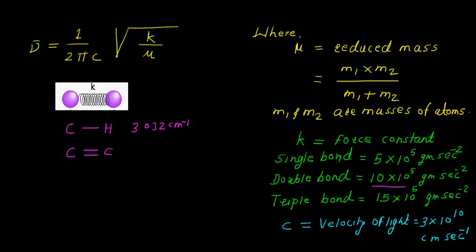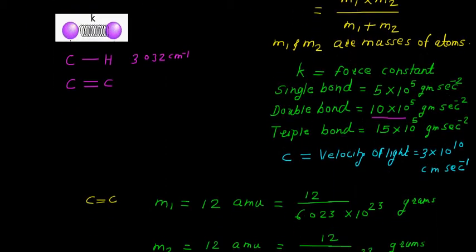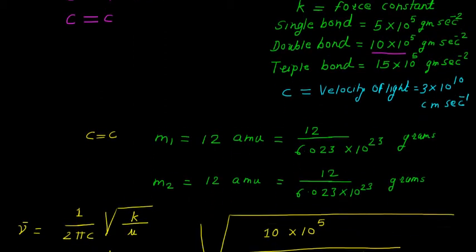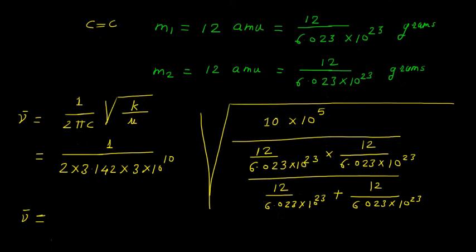we must remember about the mass value because here both the atoms are same and that is why you can see here that M₁ as well as M₂ will be equal to 12 atomic mass units and we can convert it into grams by dividing 6.023 × 10²³.